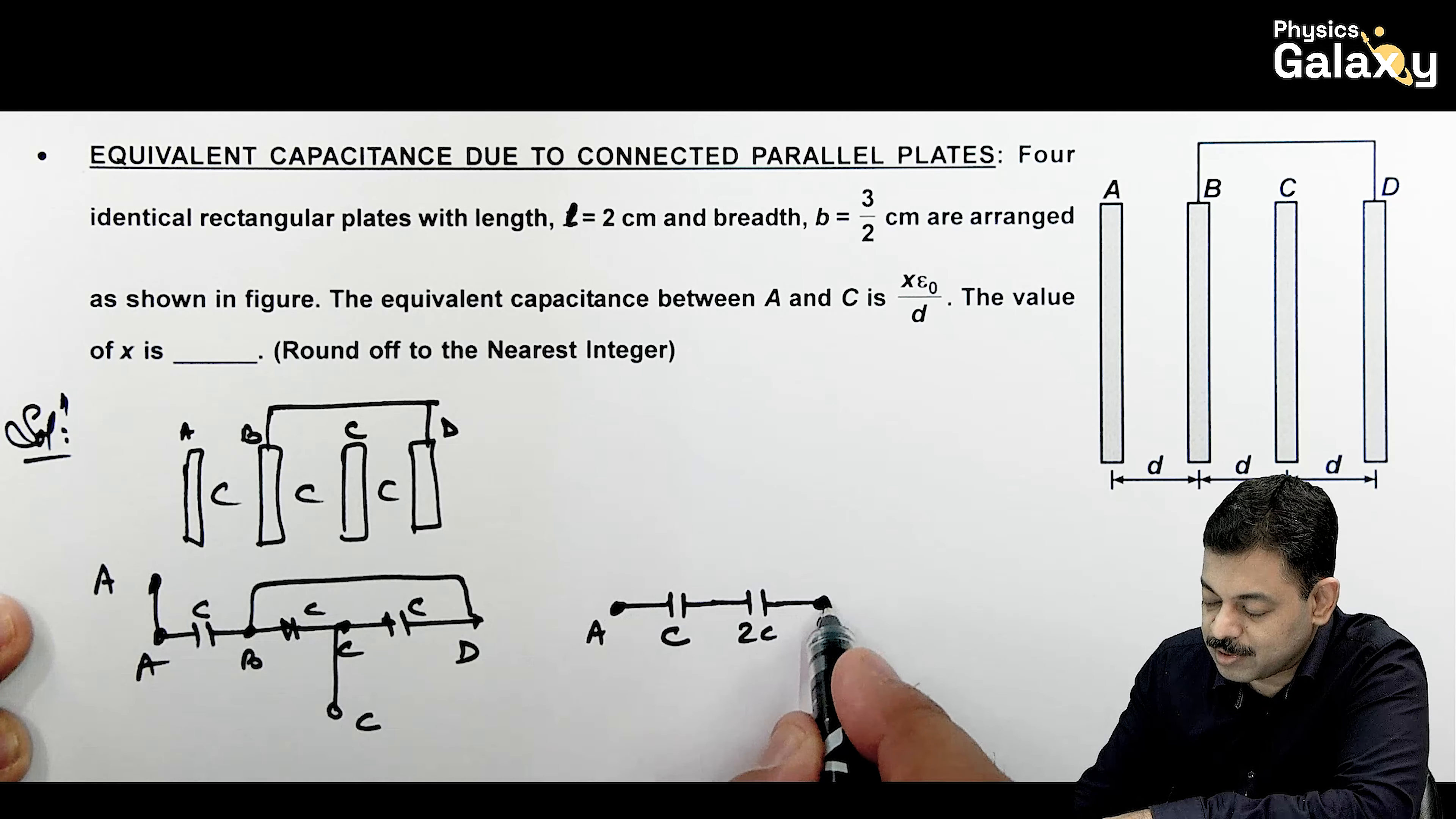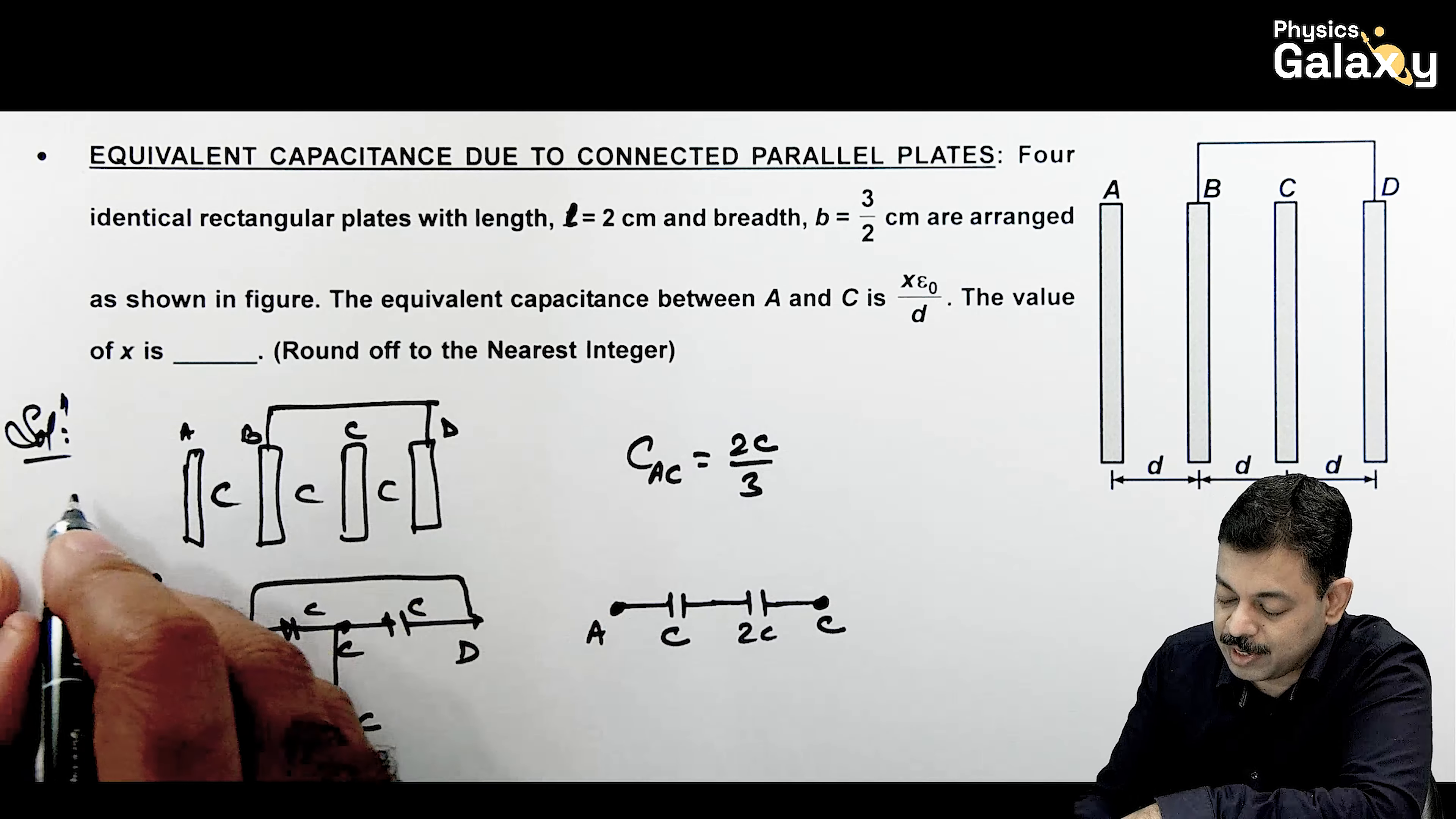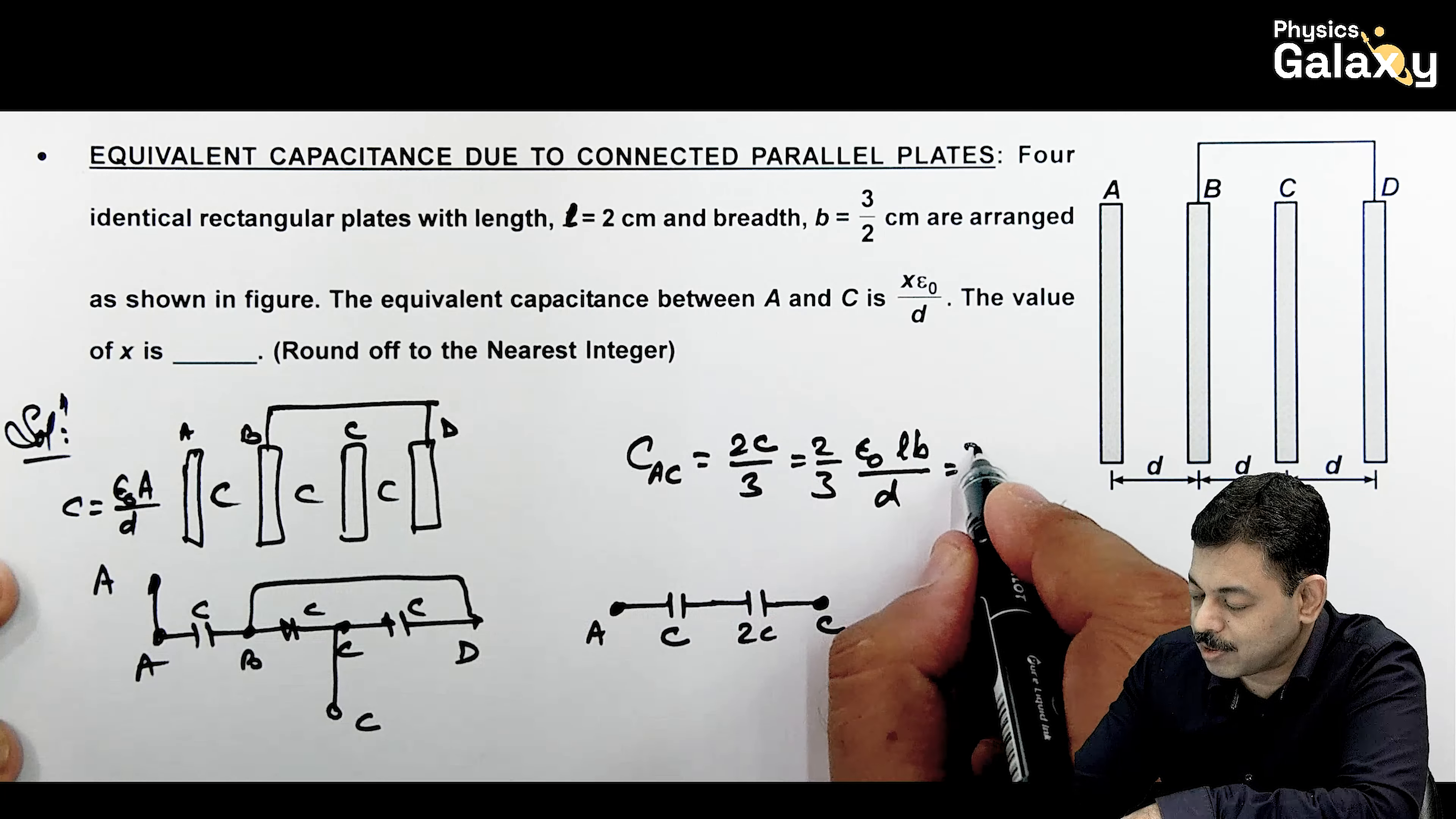So ye jo A or C terminals hain, in ke across jo C_equivalent aega C_A_C. This comes out to be C and 2C ka series combination which is 2C by 3. Aur across 2 plates capacitor C can be written as epsilon naught A by D. So here it will be 2 by 3 times epsilon naught area can be written as L into B divided by D. Agar value substitute karte hai 2 by 3 epsilon naught by D multiplied by L into B becomes 3.